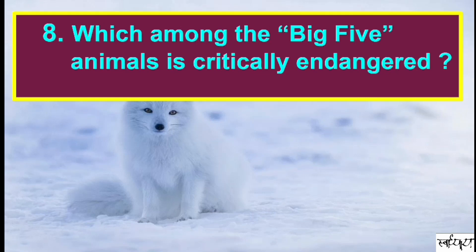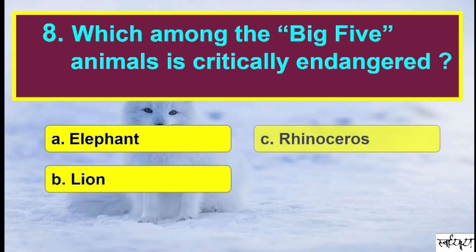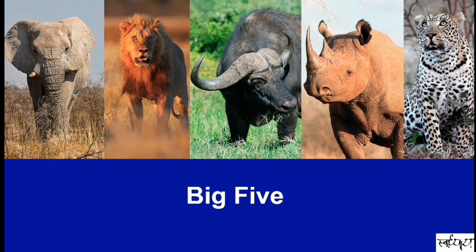Which among the big five animals is critically endangered? The answer is Rhinoceros. The big five originally refers to the difficulty in hunting them. The most endangered among them is the rhino. Lions, elephants, and leopards are vulnerable, and Cape buffalo are the least threatened.